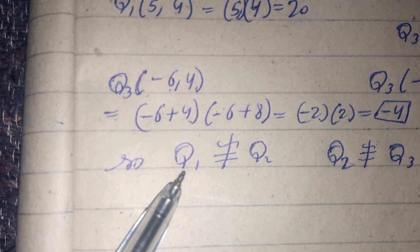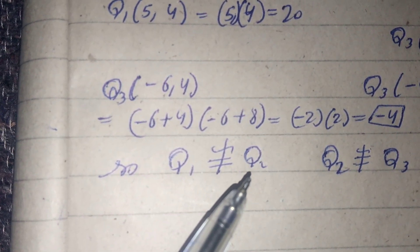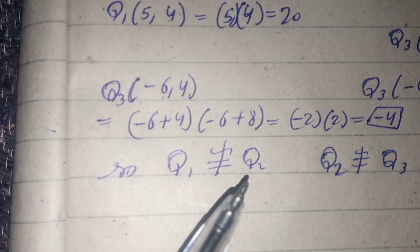So we can write q1 is not equivalent to q2. Now, we look at q2 and q3.